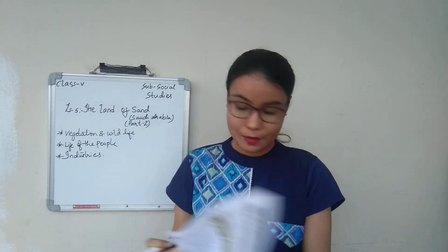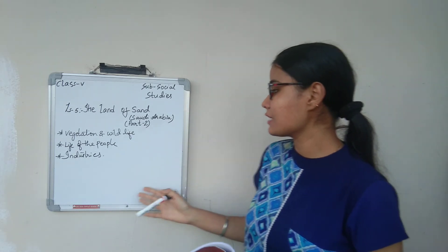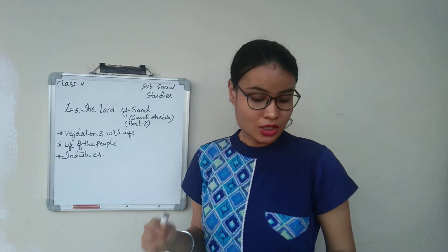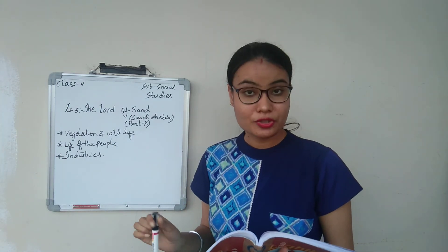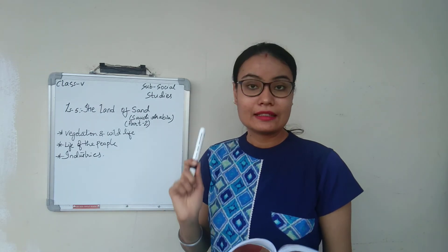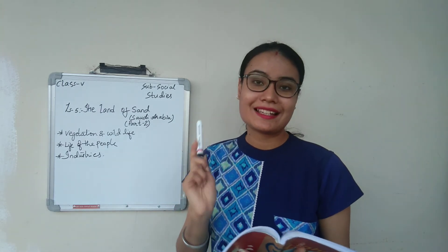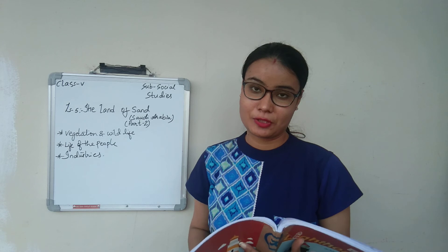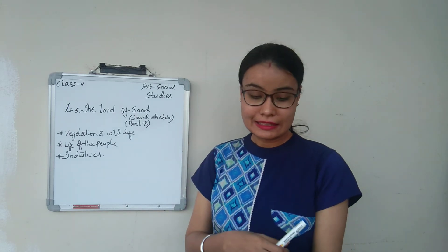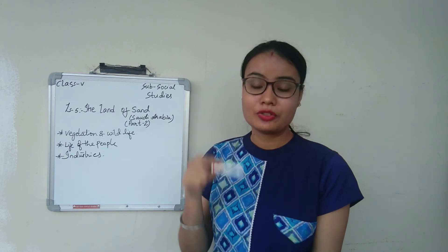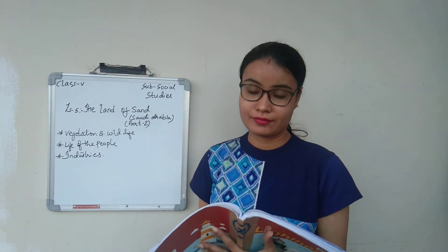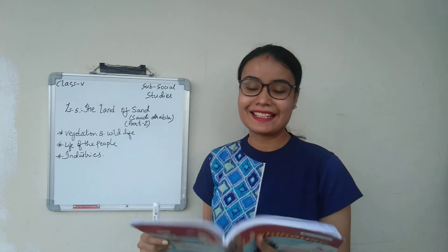So this was a brief explanation of Saudi Arabia covering industries, vegetation, wildlife, and life of the people. I hope you have understood. You will understand it better if you read the lesson and then watch my video. We will meet soon with a new lesson. Till then, read the lesson, complete the notes, take care, and goodbye.